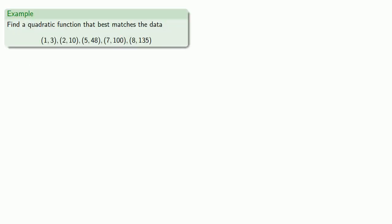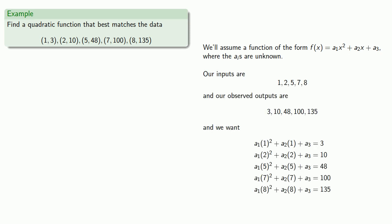For example, maybe we want a quadratic function that best matches a given set of data. So we'll assume a function of the form F of X equals A1X squared plus A2X plus A3, where the AIs are the unknowns, and we know our inputs and our observed outputs, and we want the quadratic function to produce the observed outputs from the observed inputs.